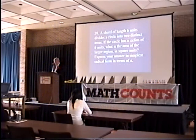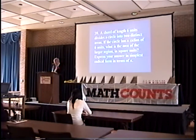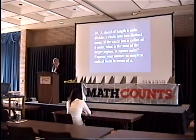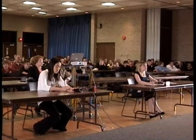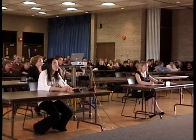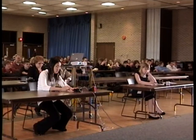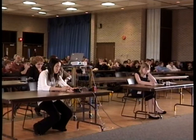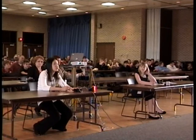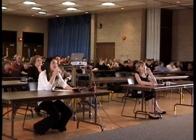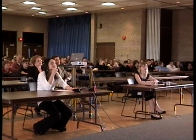A chord of length 6 units divides a circle into two distinct areas. If the circle has a radius of 6 units, what is the area of the larger region in square units? Express your answer in simplest radical form in terms of pi. 27pi. 27pi is incorrect. The correct answer is 35pi plus 9 radical 3, or 9 radical 3 plus 35pi.